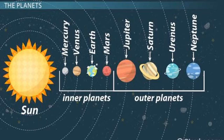The planets are classified into two groups: the inner planets and the outer planets. The inner planets — Mercury, Venus, Earth, and Mars — are very close to the sun and are made up of rocks. The outer planets — Jupiter, Saturn, Uranus, and Neptune — are very, very far from the sun. They are huge planets and made up of gases and liquids.